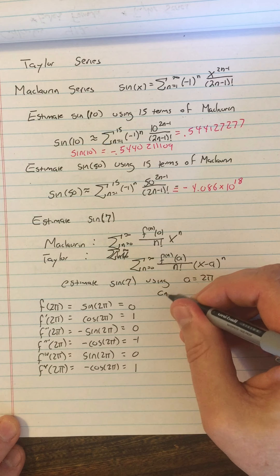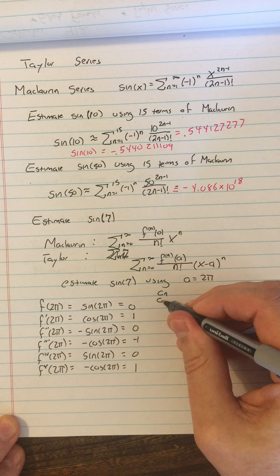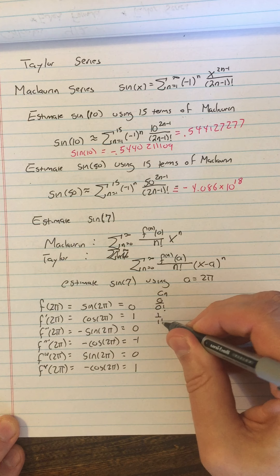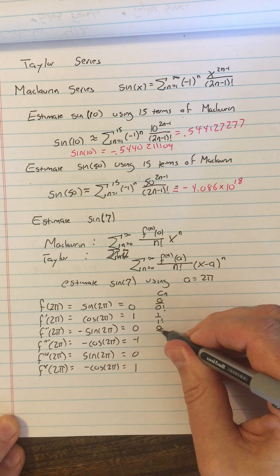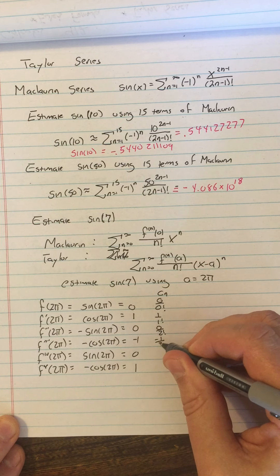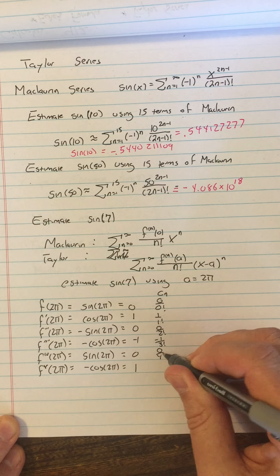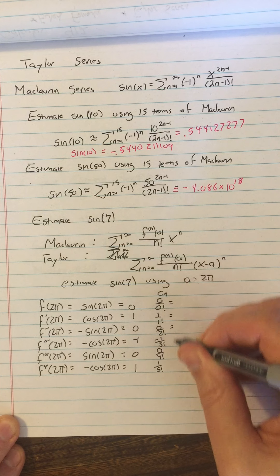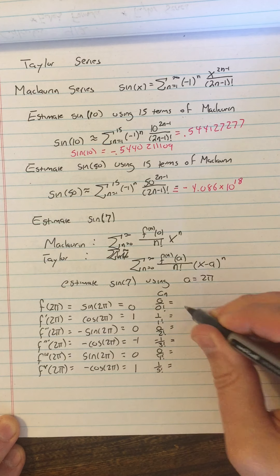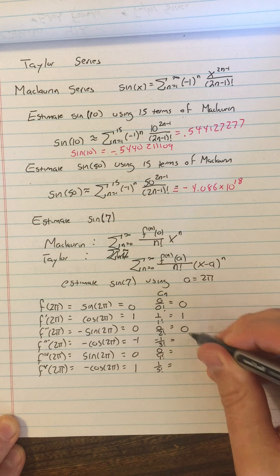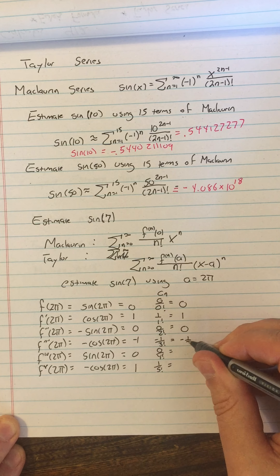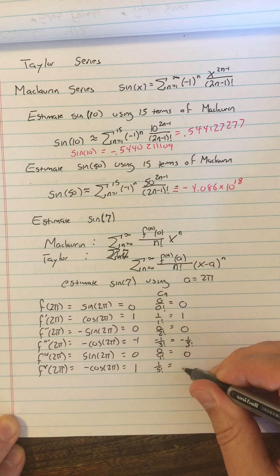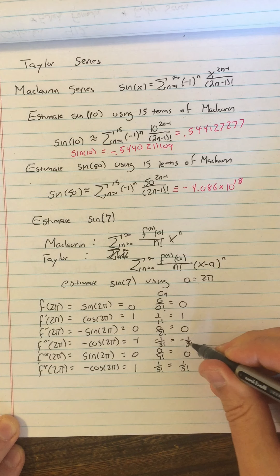I still have to look at what my c sub n's are. So I'm going to have 0 over 0 factorial, 1 over 1 factorial, 0 over 2 factorial, negative 1 over 3 factorial, 0 over 4 factorial, and 1 over 5 factorial. So what these equal are 0, 1, 0, negative 1 over 3 factorial, 0, and 1 over 5 factorial.